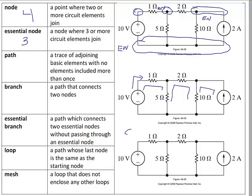A path that connects exactly two nodes is called a branch. An example of a branch would be the 10 volt source, which connects the bottom node to the top node. Another branch would be the 1 ohm resistor, or the 5 ohm resistor, the 2 ohm resistor, the 10 ohm resistor, or the 2 amp source. Typically when I count branches, I'm counting the circuit elements. Since we have 1, 2, 3, 4, 5, 6 circuit elements, we would say there are 6 branches.